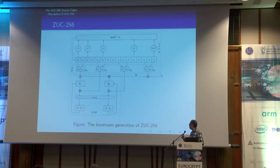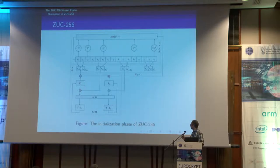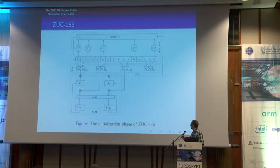The lower part is a finite state machine with two memory registers. At each step, a 32-bit keystream word is generated. In the initial phase, there is no XOR of X0 with X3 at the output of the finite state machine; instead, the output W is shifted right by one bit and fed back to the linear feedback shift register.